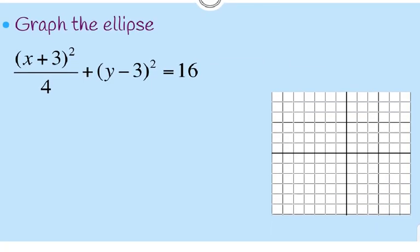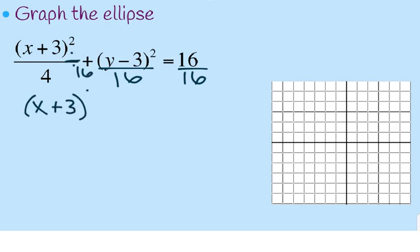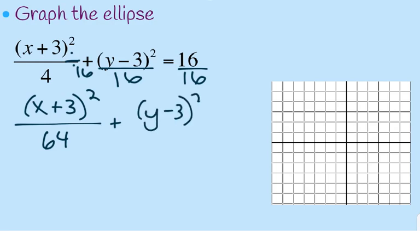Example 4: graphing the ellipse. The number on the side is not 1, so I divide everything by 16. I get (x + 3)-squared over 64 plus (y - 3)-squared over 16 equals 1. From here, I can identify my center at (-3, 3). The a-squared is 64 and is under the x, so the major axis is horizontal.